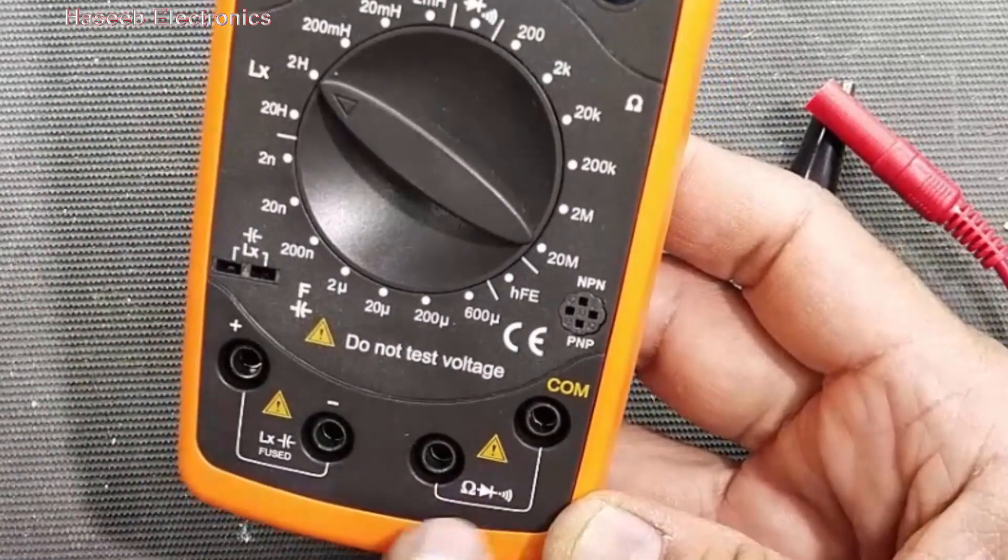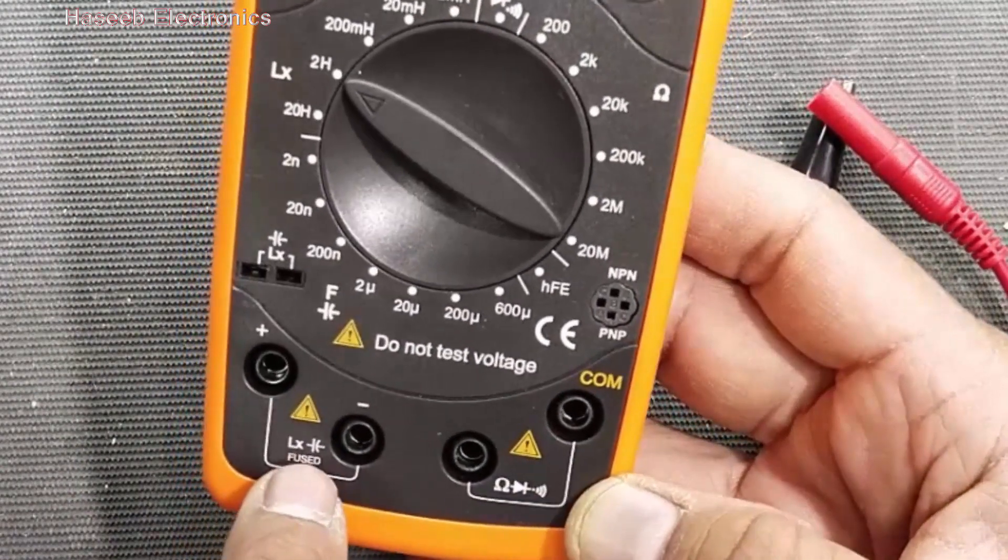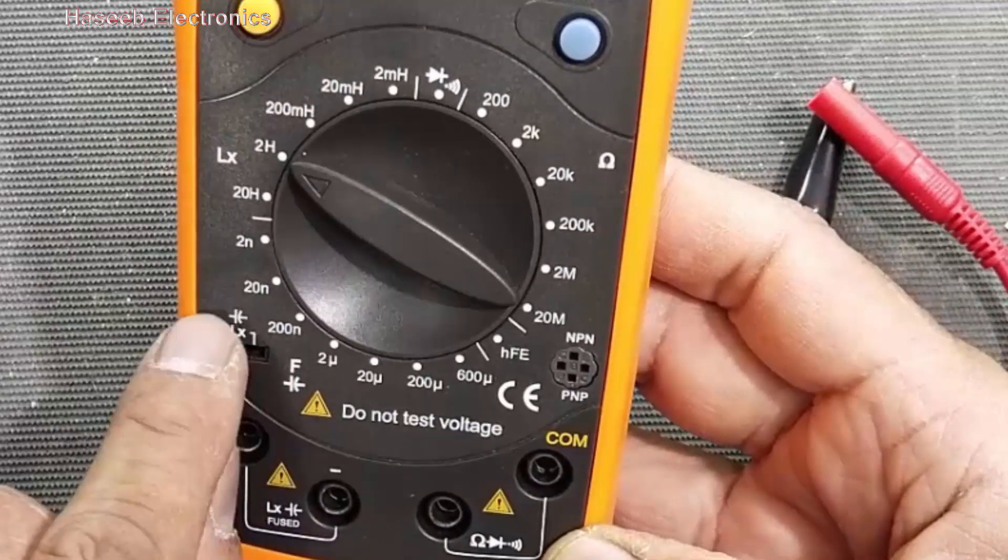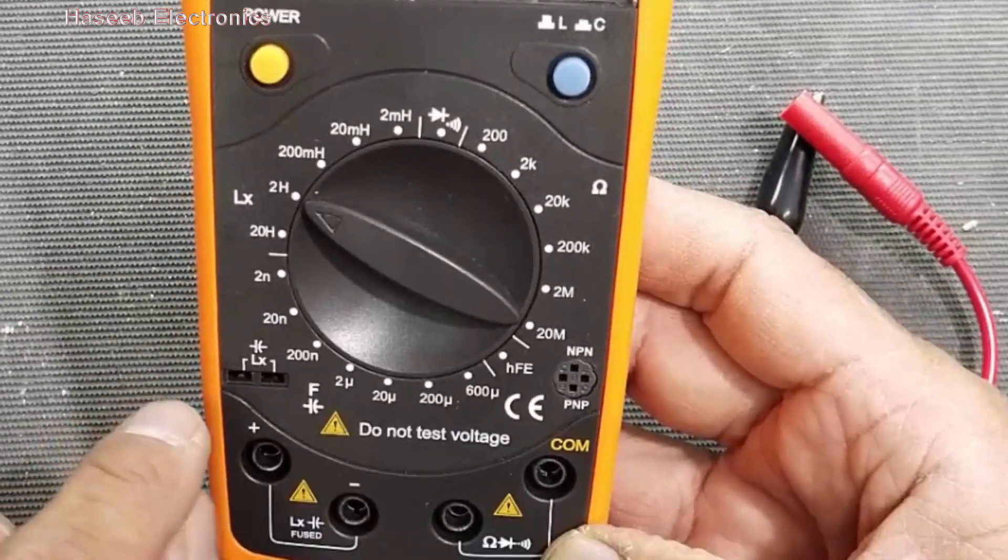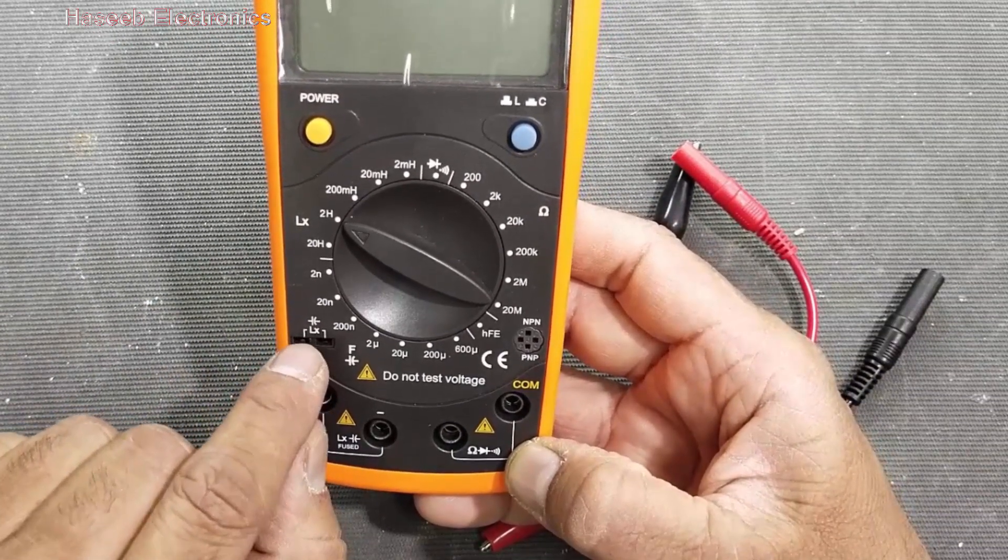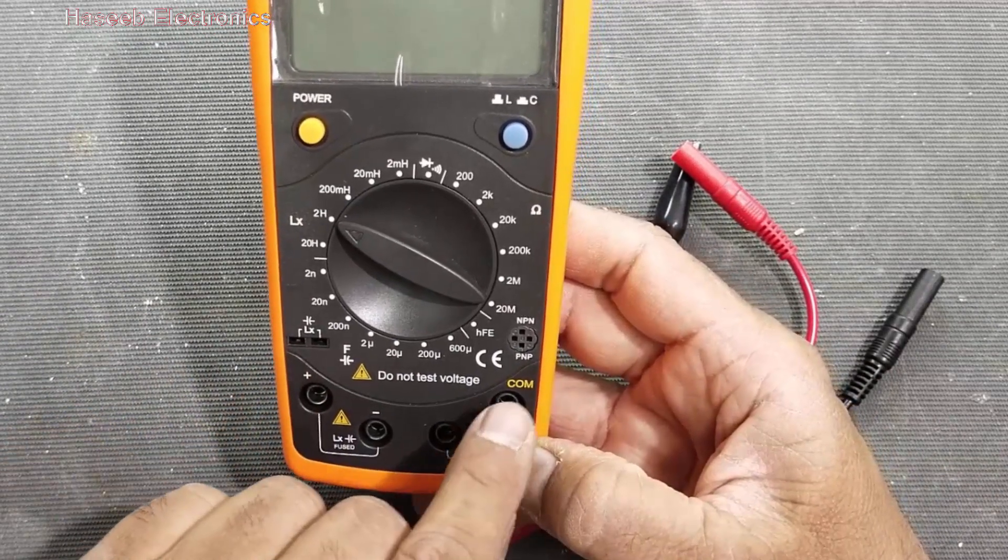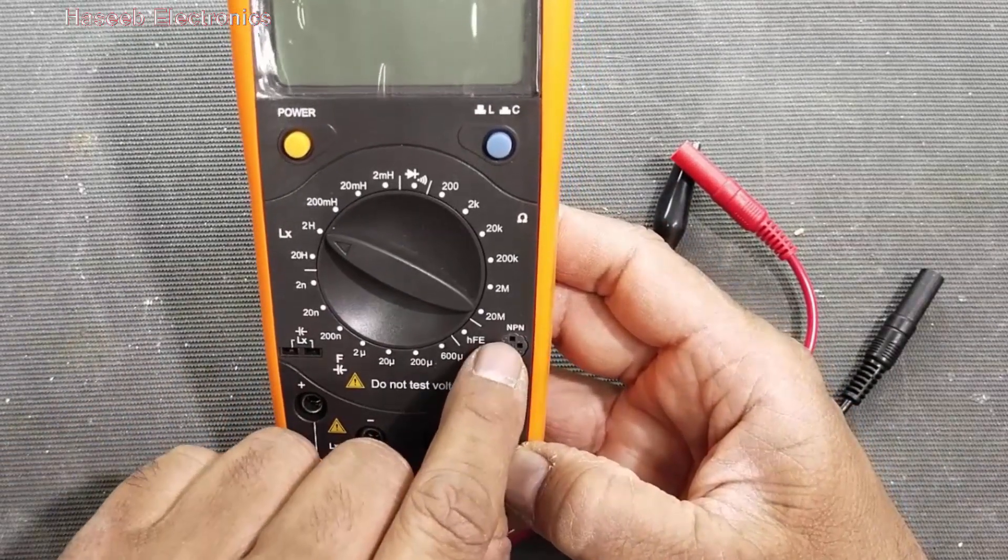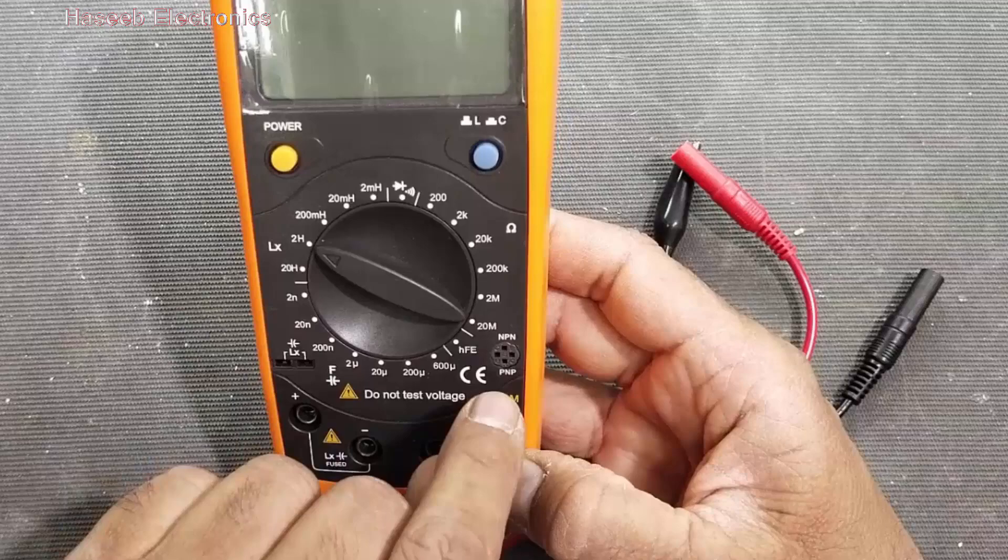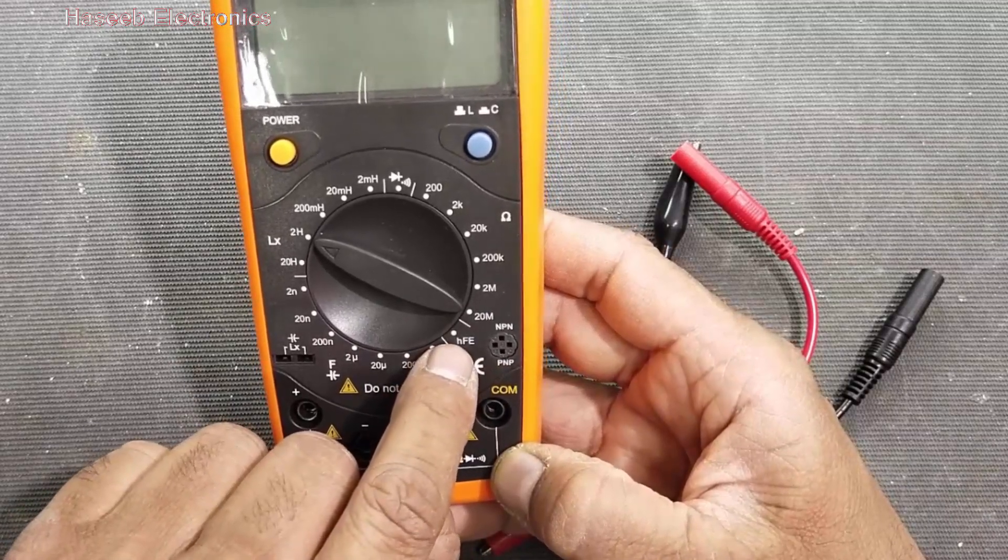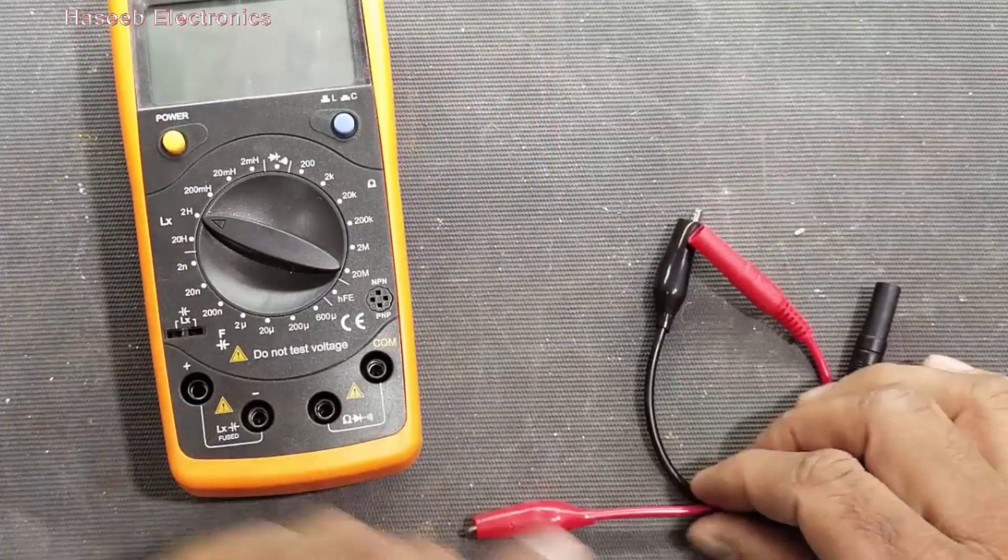And here we have test jack for inductor and capacitor to measure a perfect measurement for any inductor or capacitor. And here we can test transistors NPN or PNP on HFE or gain mode. So let's check.